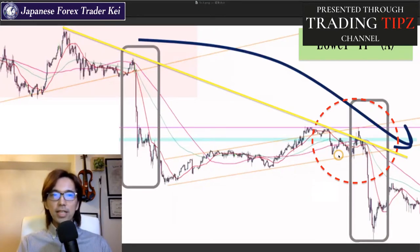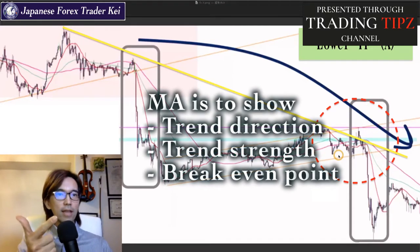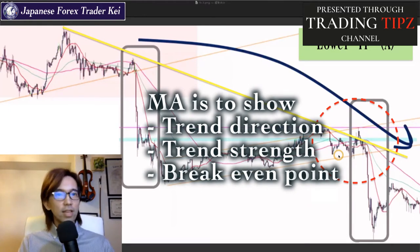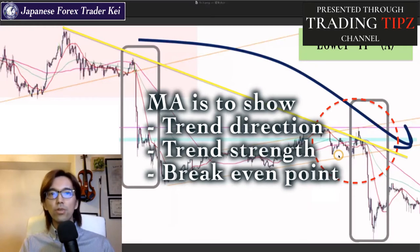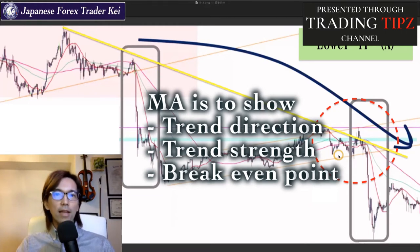Moving average is good at showing you trend direction, trend strength, and the break-even point. But in my opinion, it's not really a good entry indicator — because there are indicators for showing market trend and indicators for showing market volatility and entry timings. Moving average is the one for capturing the trend direction.